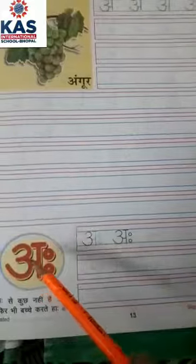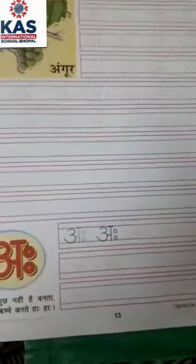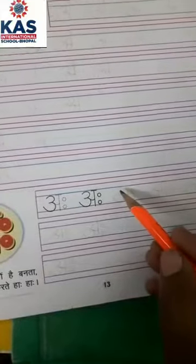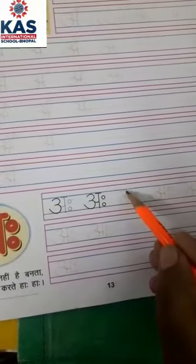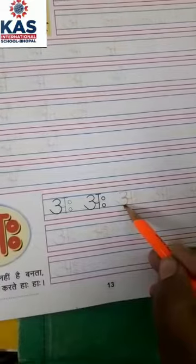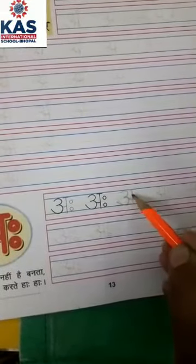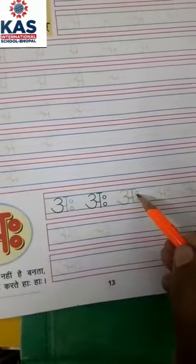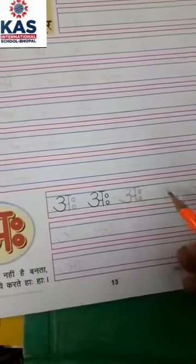Next. A. Aha. Kali. Trace and write. A. Aha. Kali.